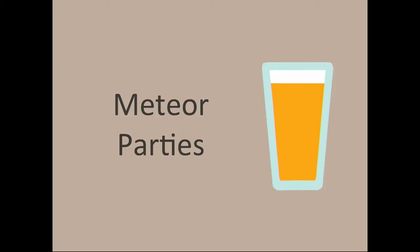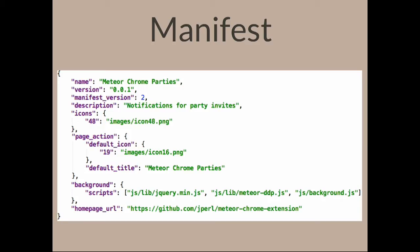We could quickly build a simple Chrome extension based on the Meteor Parties example, which is available on the Meteor site and lets you create parties. This extension will show how many public parties there are and update whenever you add or remove a party. The first thing you need is the manifest file — a JSON document with properties like name, version, description, and homepage URL.